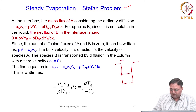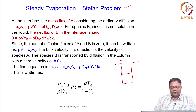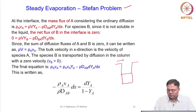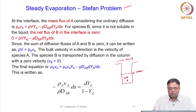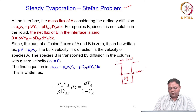Let us focus our attention on the interface now. At the interface there is evaporation from the liquid. This is liquid A and this is gas B, and this is the interface. At the interface, mass flux of A considering ordinary diffusion is given here.